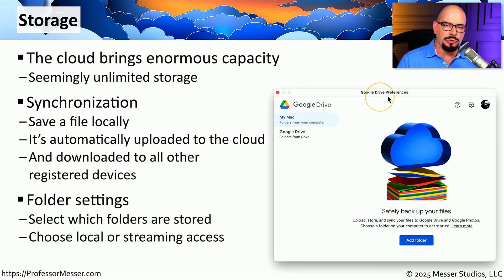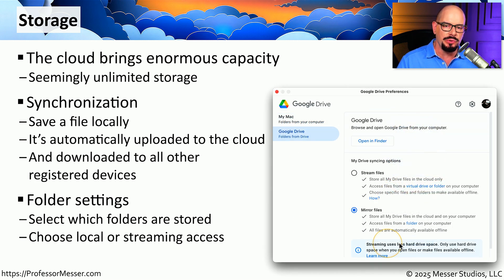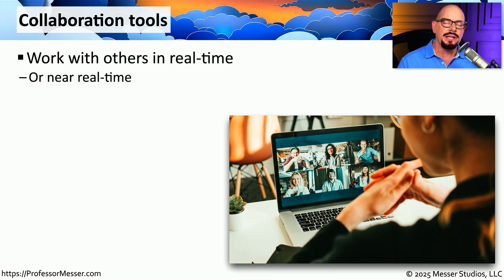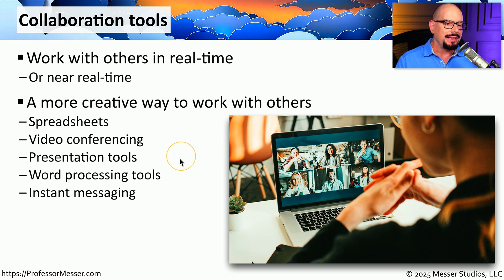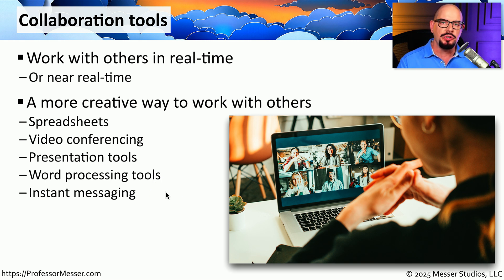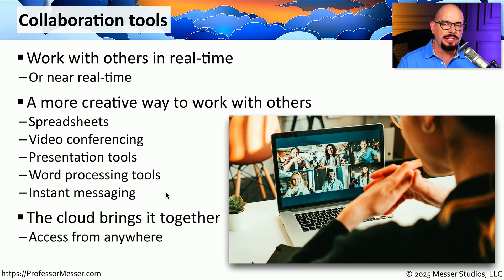This allows us to store information in one place and have that single file replicated to all of our important devices. For example, if you're using something like Google Drive, you can choose which files and folders you'd like to synchronize into the cloud. This allows you to mirror those files across all of your other systems, or you can choose to simply store everything in the cloud and retrieve it when you want to use it. We've become very accustomed to collaborating with others using cloud-based systems. It's very common now to turn on your camera and be part of a group meeting, sharing spreadsheet information and financial data, doing video conferencing or presentations, or all editing the same word processing document with everyone seeing changes in real time. In a large organization, you're probably also using instant messaging synchronized via cloud-based services, meaning you don't have to be in a particular building — you can work from anywhere in the world with a laptop.